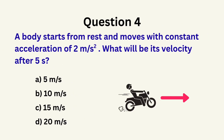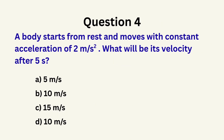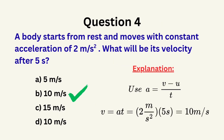Question 4: A body starts from rest and moves with constant acceleration of 2 meters per second squared. What will be its velocity after 5 seconds? A. 5 m/s, B. 10 m/s, C. 15 m/s, D. 20 m/s. The correct answer is B: 10 meters per second.